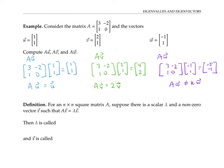I'll explain what this means more precisely in the following definition. For an n by n square matrix A, suppose that there's a scalar lambda and a nonzero vector x such that A times x equals lambda times x. Then lambda is called an eigenvalue for A, and x is called an eigenvector.